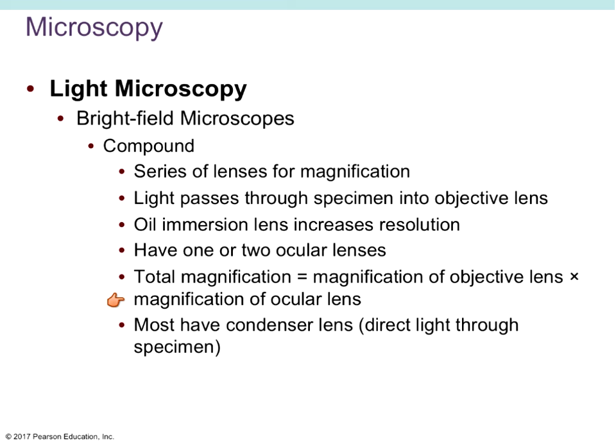Using the oil immersion objective helps to increase resolution. It ensures the wavelength is tighter, so light goes straight through the objective rather than being scattered or refracted into the environment, giving a nice clear picture. You've probably observed that when you put your oil immersion objective down, what was once diffused and grainy becomes much clearer as a result of the oil.